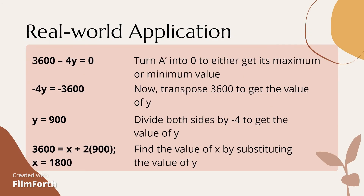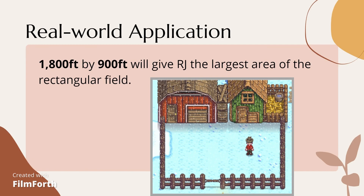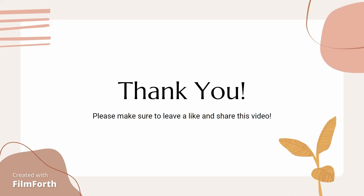Setting the derivative equal to zero and transposing gives negative 4y equals negative 3,600. Dividing both sides by negative 4, we get y equals 900. We then find the value of x by substituting y equals 900 into 3,600 equals x plus 2 times 900, which gives x equals 1,800. The answer is that dimensions of 1,800 feet by 900 feet will give RJ the largest area of the rectangular field. That will be all, and thank you for listening.